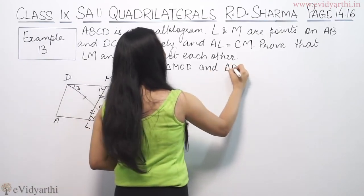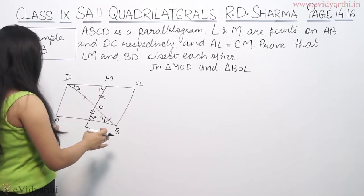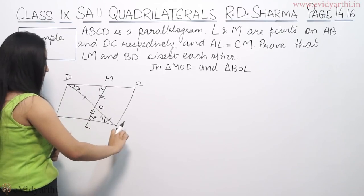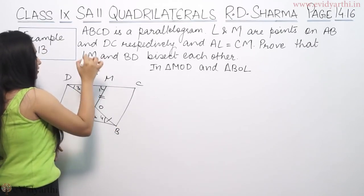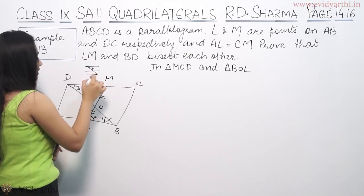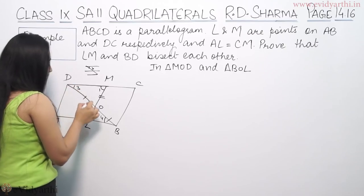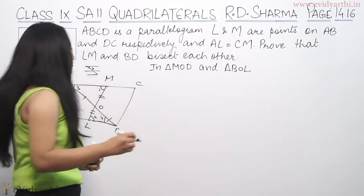Now if this is parallelogram, this is parallel and this is a transversal. So this is angle 3 and this is angle 4. These are alternate angles.